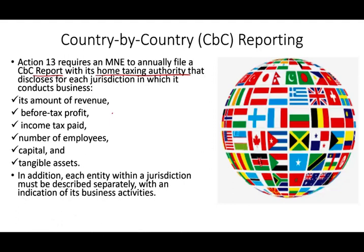Each entity within the jurisdiction must also separately describe its business activity. This tells the tax authority a lot about your business — for example, a restaurant has a certain gross margin while a retail business has another. These numbers can be used as guidelines to help tax authorities determine whether an audit or a closer look is required. This is, in brief, the OECD response.